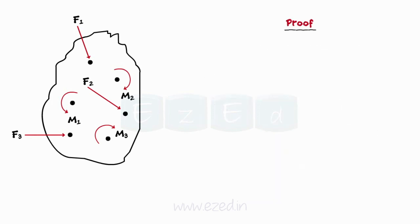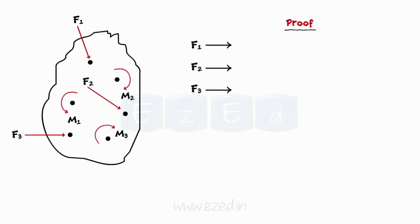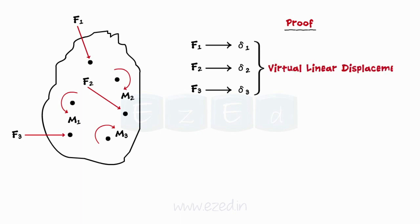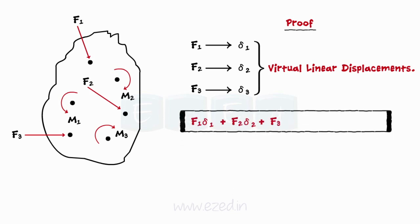Let us now prove this principle. Consider a system of forces F1, F2, F3 and couple moments M1, M2, M3 acting on a body as shown. The linear forces F1, F2, F3 will have linear displacements δ1, δ2, δ3 respectively. These displacements are known as virtual linear displacements. Hence, the work done due to these forces is given by the summation of the product of the magnitude of a force and its virtual linear displacement. This work done is known as virtual work.